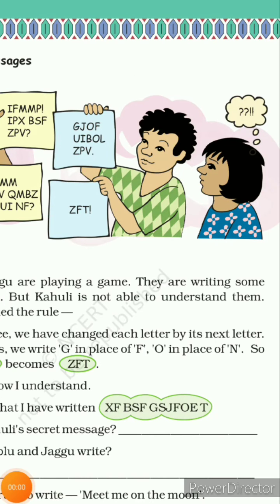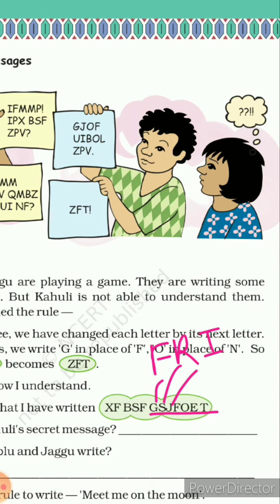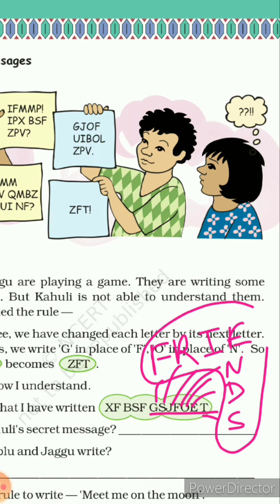Now the third one: G se pehle aapka aata hai F, S se pehle R, J se pehle I, F se pehle E, O se pehle N — M N O — and E se pehle D, and T se pehle S. So yeh aapka ban gaya hai F R I E N D S.